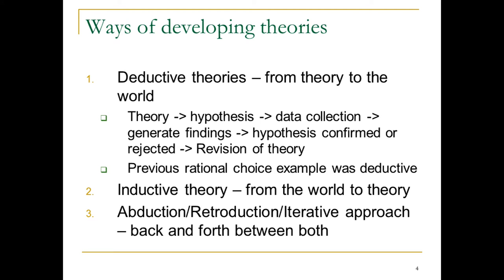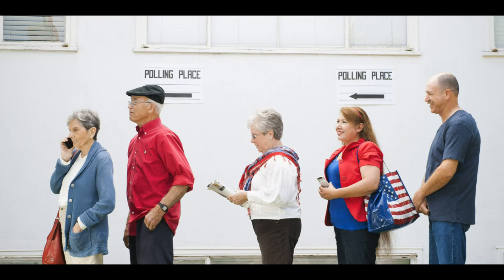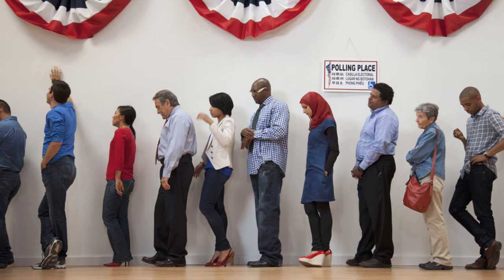How do we develop theories? There are two main classifications and then a third, which is the iterative approach. Deductive theories go from a theory to the world. You have a theory of how the world works — a causal mechanism. For example, the older you get, the more likely you are to vote, because people become more politically invested through paying taxes and interacting with government. Therefore, hypothesis: the older someone is, the more likely they are to vote. The null hypothesis would be that age is in no way related to whether or not someone chooses to vote, or that age is not significant when predicting someone's likelihood of voting. You then go out and collect data, run models, and generate findings.